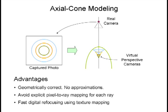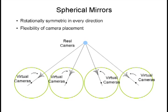Since the cone of rays corresponds to a circle of pixels in the image plane, each circle of pixels can be mapped to a perspective camera inside the mirror with a different viewpoint and different cone angle. We call the set of virtual cameras axial cone cameras, since all these cameras will lie on the mirror axis. The advantage of this modeling is that we do not require an explicit pixel-to-ray mapping by solving the reflection equations for each ray.